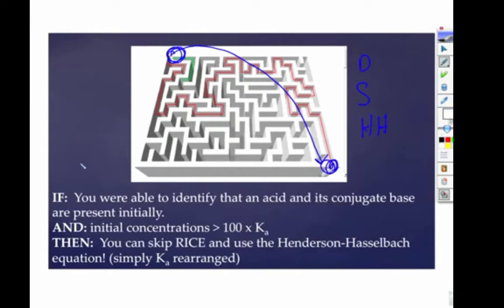And you are allowed to do it only under a few conditions. One, you identify that you have an acid and its conjugate base. This can be the buffer zone of a titration or you could have a weak acid plus a salt of the conjugate base. That's why it was so important. That's why I wanted you to recognize what a salt of the conjugate base looked like.